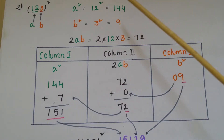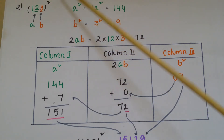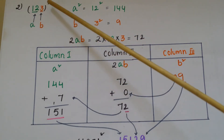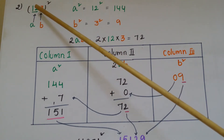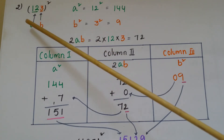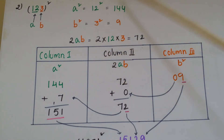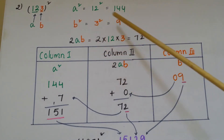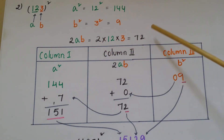The next example is finding the square of 123. Here we assume a = 12 and b = 3, because there are three digits and we can find 12² easily. Calculate: a² = 12² = 144, b² = 3² = 9, and 2ab = 2 × 12 × 3 = 72.